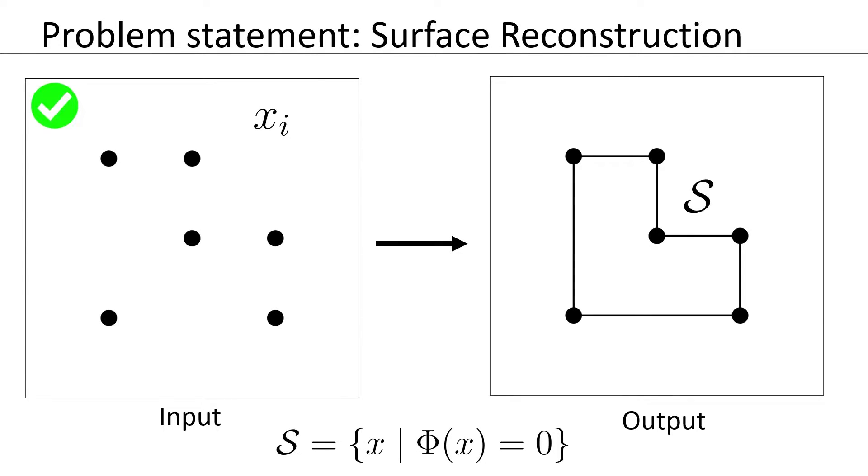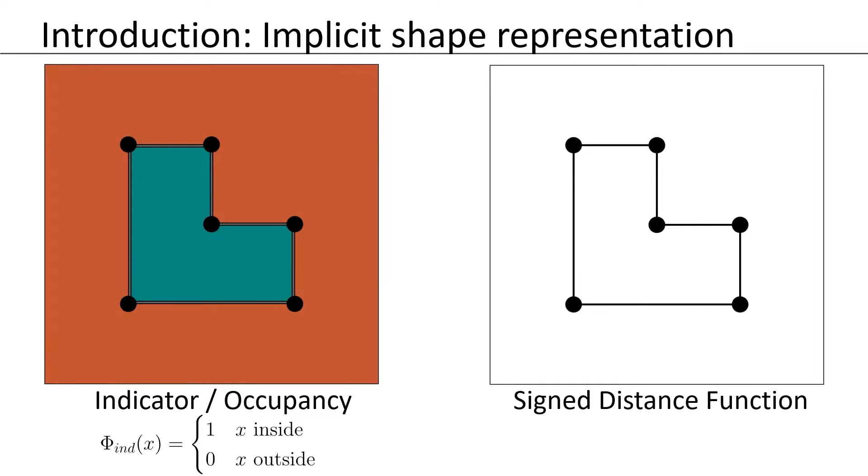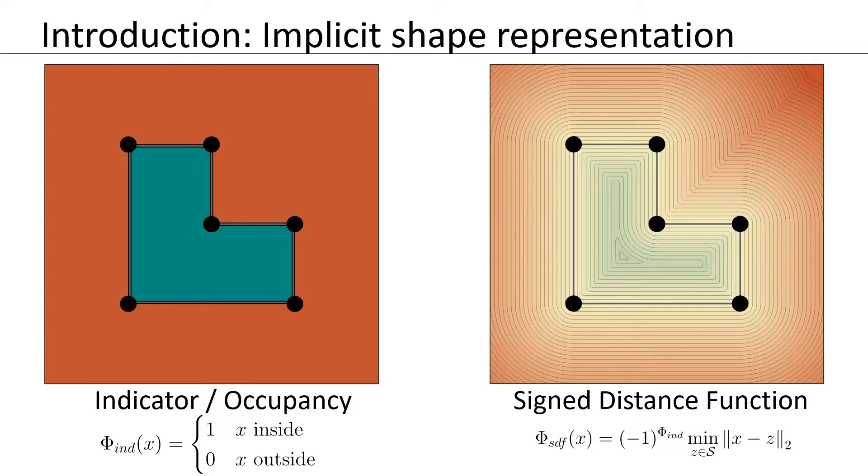This means that the surface is the zero-level set of some unknown function. In recent years, a popular choice for this function is a neural network that learns either an indicator function or a signed distance function.